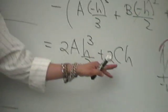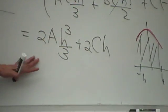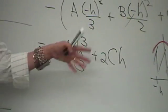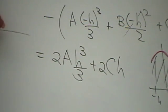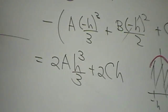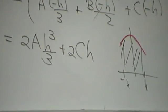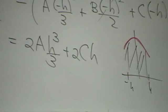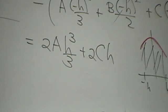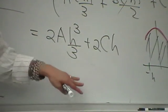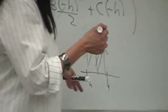So far we have the area in terms of a and c — b disappeared. Our goal now is to express a, b, and c in terms of our function f, because we're doing numerical integration and we need to use f somehow. So that's what we're going to try to do.